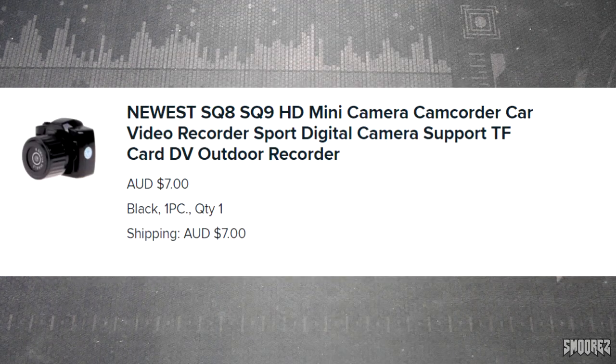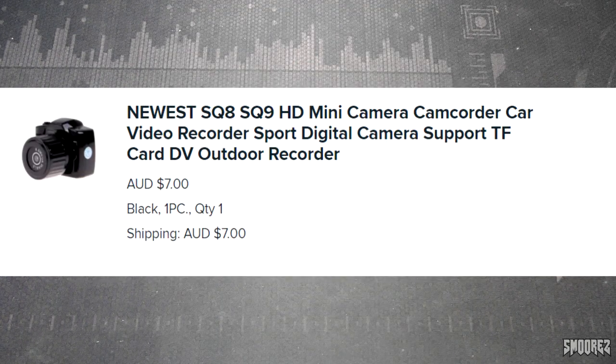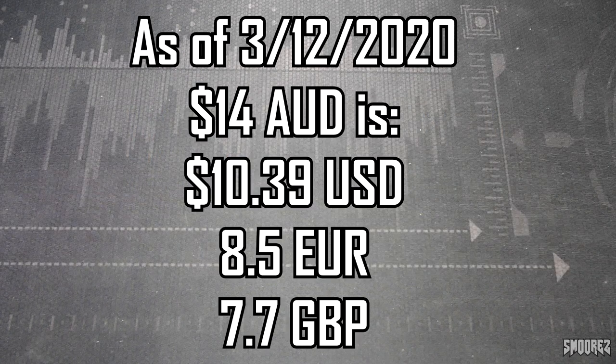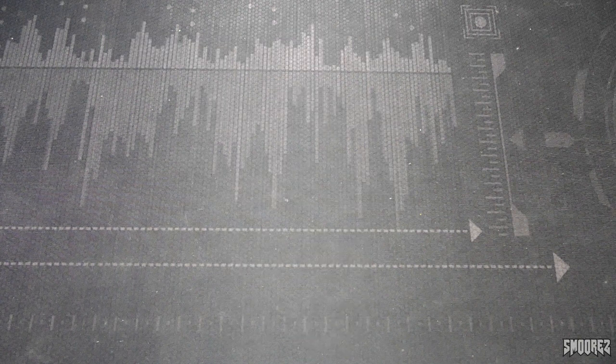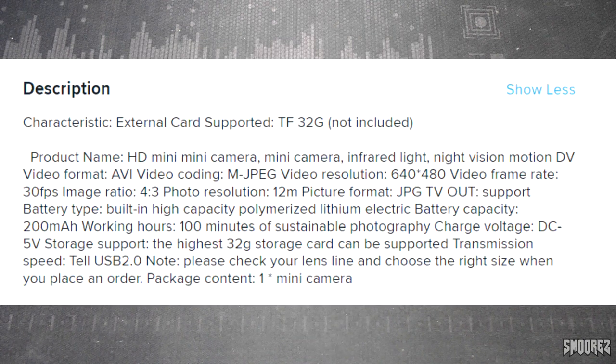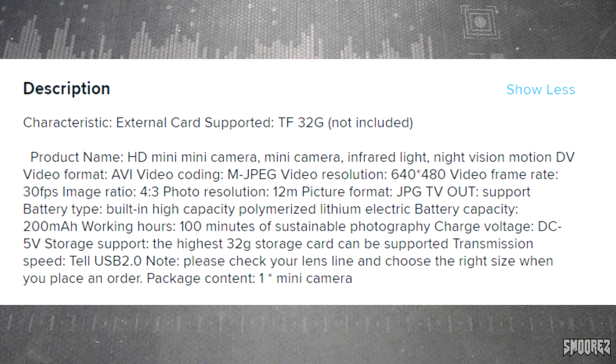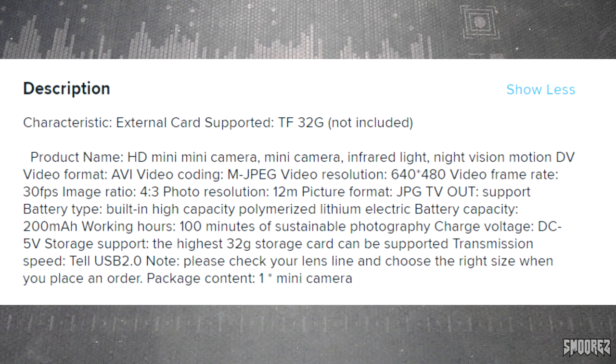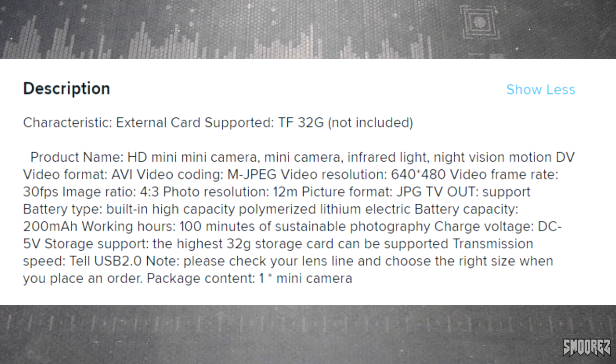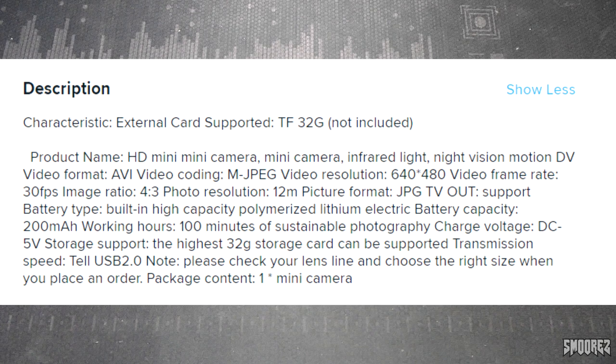This was originally seven dollars for the item and seven dollars shipping, so 14 bucks Australian, probably like ten dollars US or something. The description says it supports up to a 32 gig micro SD card, can take 480p video which is more than enough I suppose, has infrared light, night vision, motion DV, a 200 milliamp hour battery. Package content: one mini camera. I don't know if it includes accessories but we'll soon see.